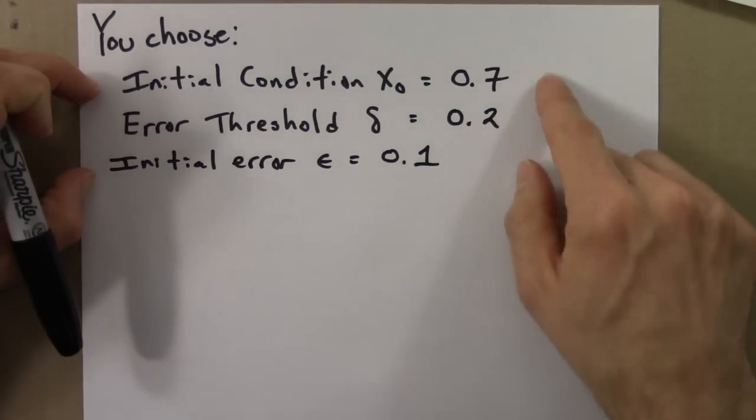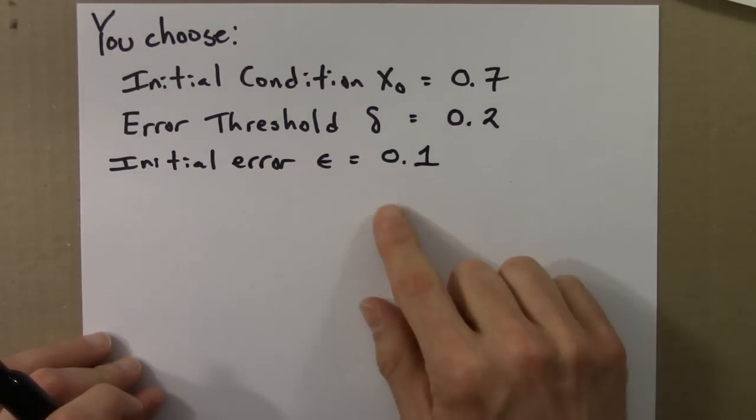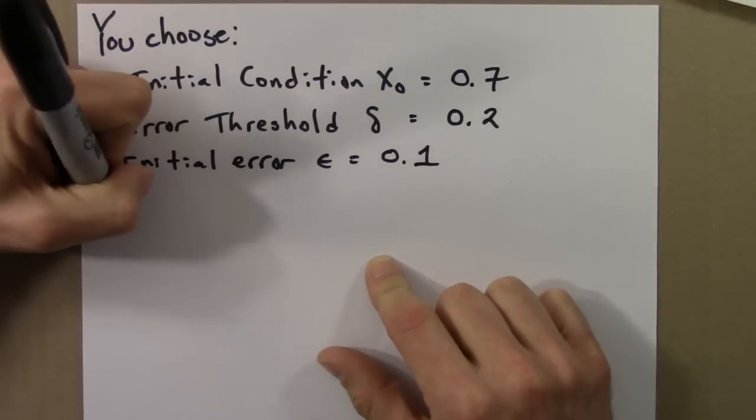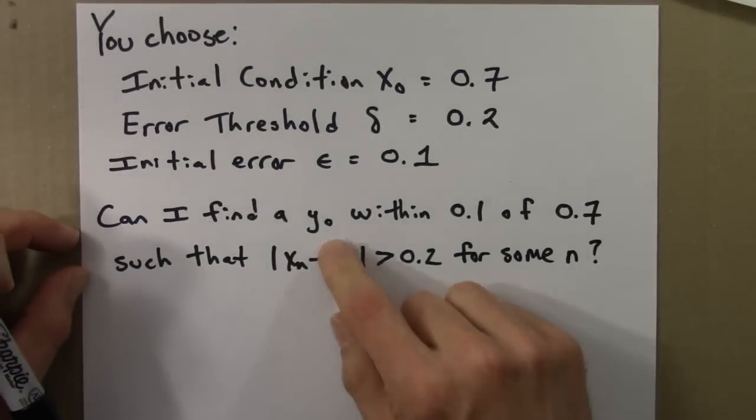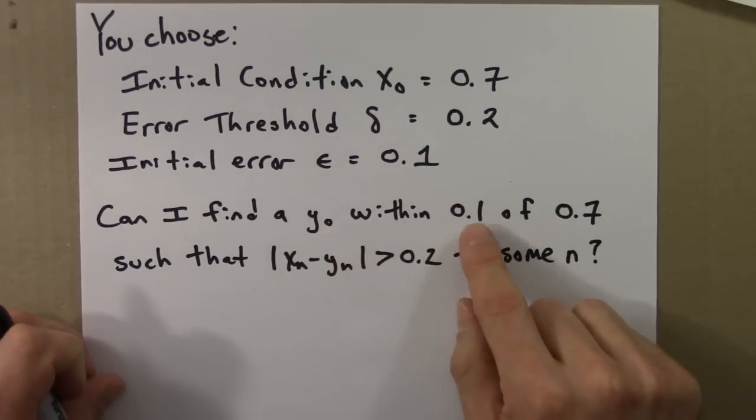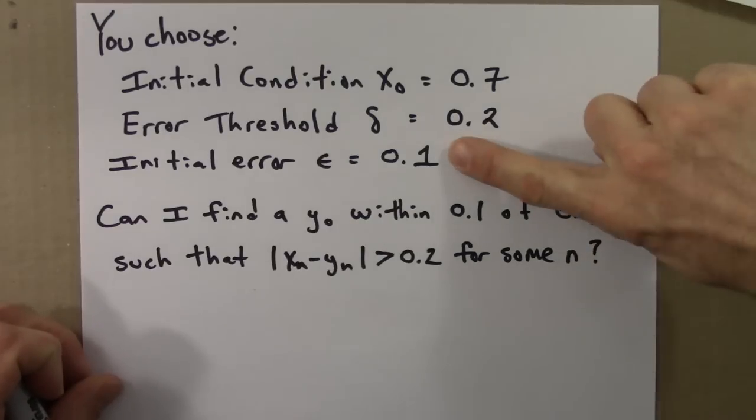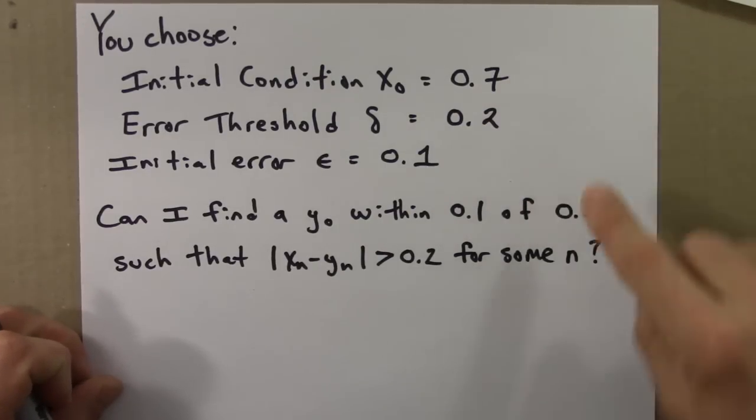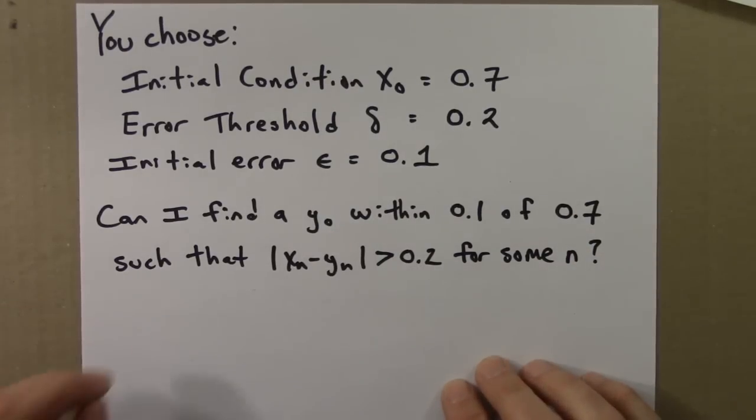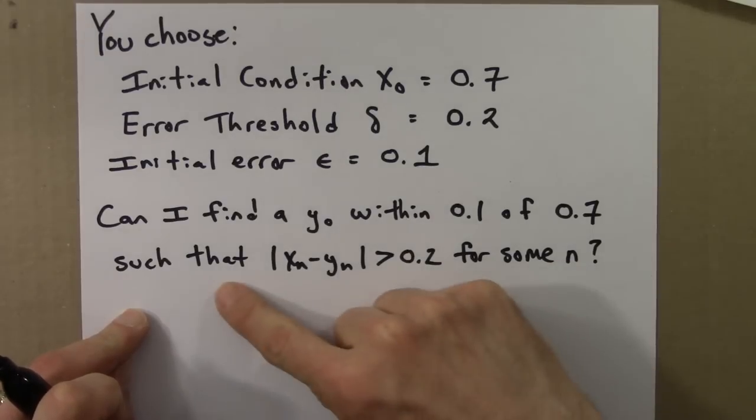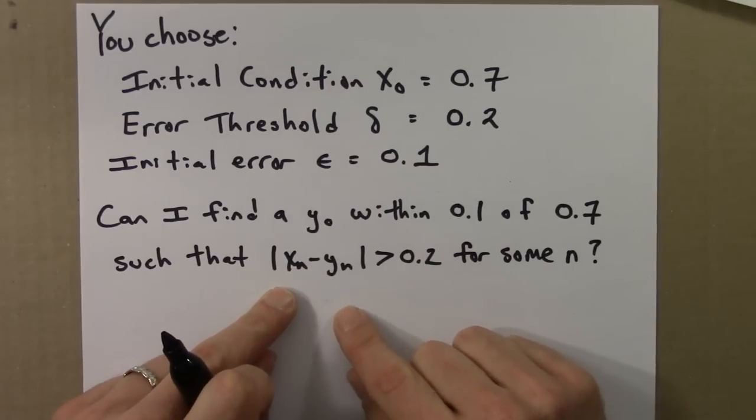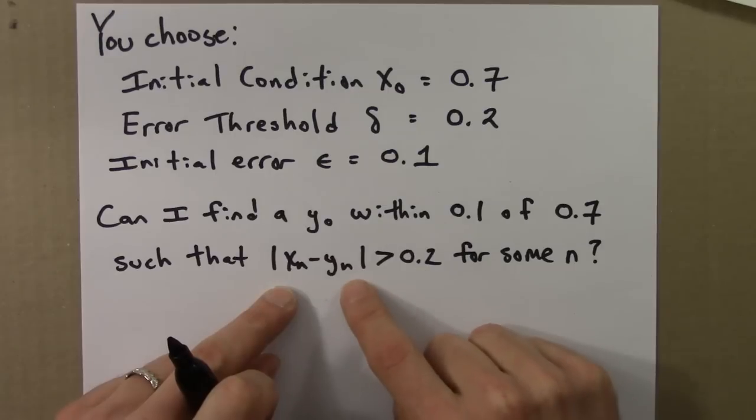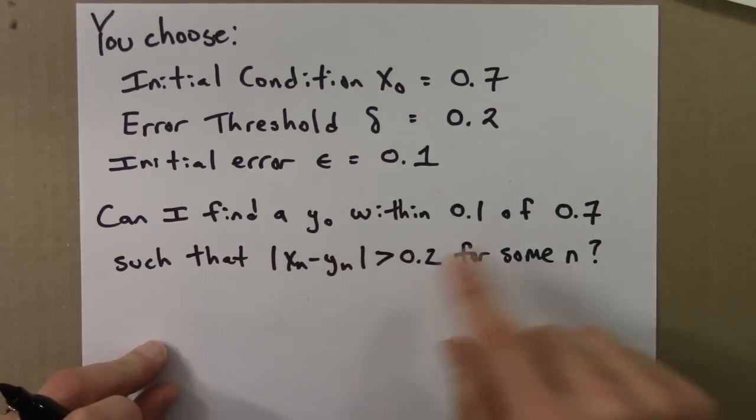You make these choices of these three numbers for the logistic equation. And then the puzzle is I have to come up with the following. The task for me is: can I find a y₀, some other initial condition, that's within 0.1 of 0.7—that's within epsilon of the x₀ you chose—and this y₀ that I find has to have the following property. There's some n, number of iterates, such that after that, or at that iterate, the nth iterate of xₙ is now more than 0.2 away from the nth iterate of yₙ. The puzzle for me is I need to find a y₀ that has this property.